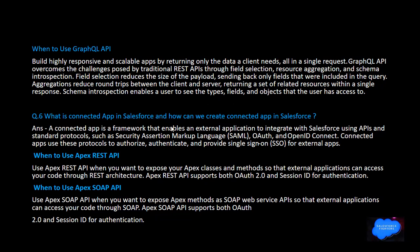What is a connected app in Salesforce and how can you create one? A connected app is a framework that enables external applications to integrate with Salesforce using APIs and standard protocols such as SAML and OAuth and OpenID Connect — protocols used for authorization and providing Single Sign-On (SSO) for external apps.